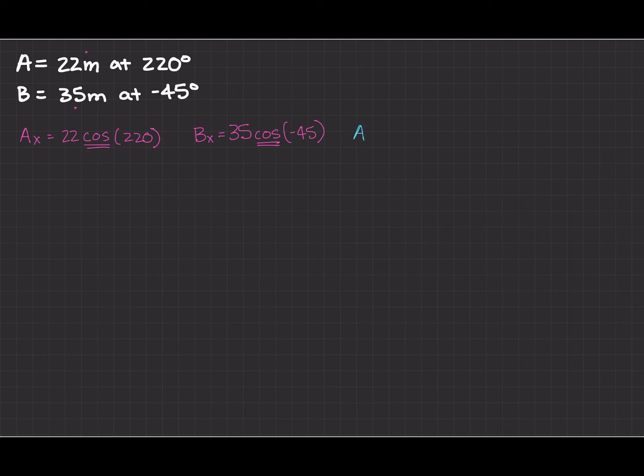And so then I'm going to do the same thing over here. So I'm going to do 22 sine 220. So it's exactly the same. The only difference is we're using sine. And then I'm going to have By is equal to 35 sine negative 45. And again it's just sine for the y-axis and cosine for the x-axis.